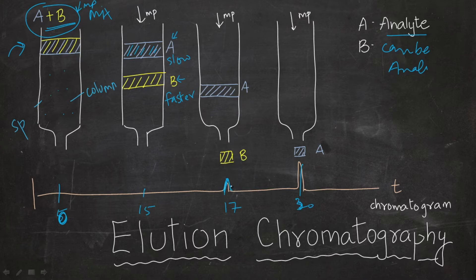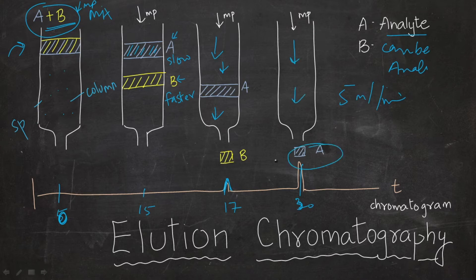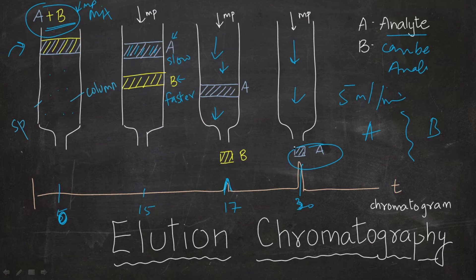We continue running the mobile phase — say at 5 ml per minute. At 30 minutes, we get A coming out. So we get two peaks: A and B are separated, A separate and B separate. Both are detected. In some chromatographic processes we only detect, in some we measure, and in some we separate — so chromatographic processes can do various things.